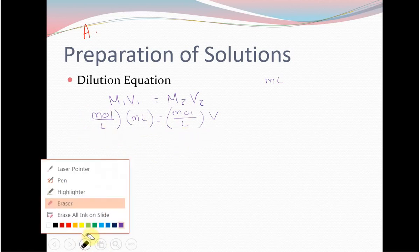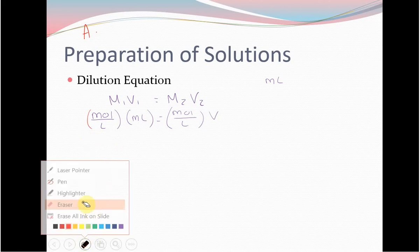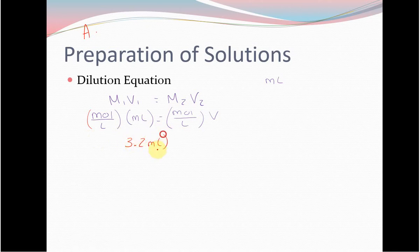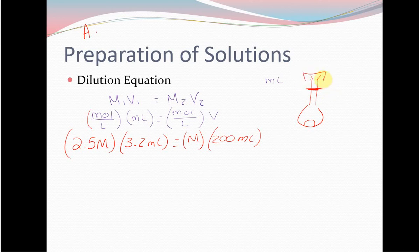Your procedure tells you to take 3.2 mL of your 2.5 molar stock, and then dilute that to 200 mL in a volumetric flask. The volumetric flask has just one line — you add your 3.2 mL of NaOH and then fill with deionized water to that line. Then cover with parafilm or a stopper and invert it, shake it around, and make sure it's nice and mixed so the solution is homogeneous all the way through.